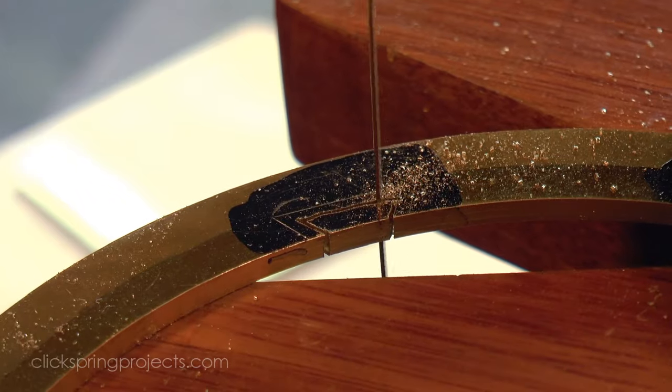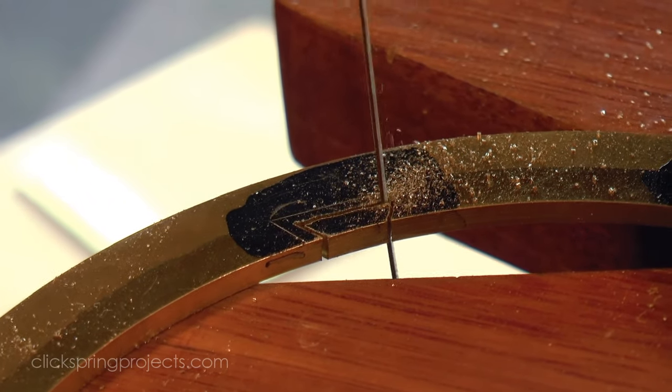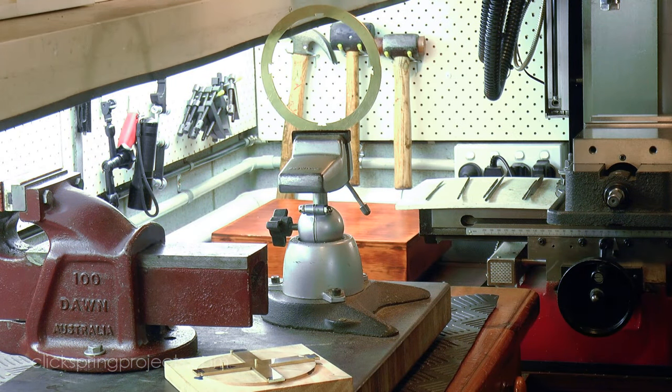First when removing the waste stock, I make sure I leave some excess material over the object line, to give me something to work with. A millimeter or so usually works well, but often I'll leave a little more to play it safe.